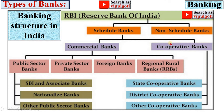Scheduled Banks are classified into two categories: Commercial Banks and Cooperative Banks. Commercial Banks are further classified into four categories: Public Sector Banks, Private Sector Banks, Foreign Banks, and Regional Rural Banks. Public Sector Banks are further classified as SBI and Associate Banks, Nationalized Banks, and other Public Sector Banks. Cooperative Banks are further classified as State Cooperative Banks, Direct Cooperative Banks, and other Cooperative Banks.